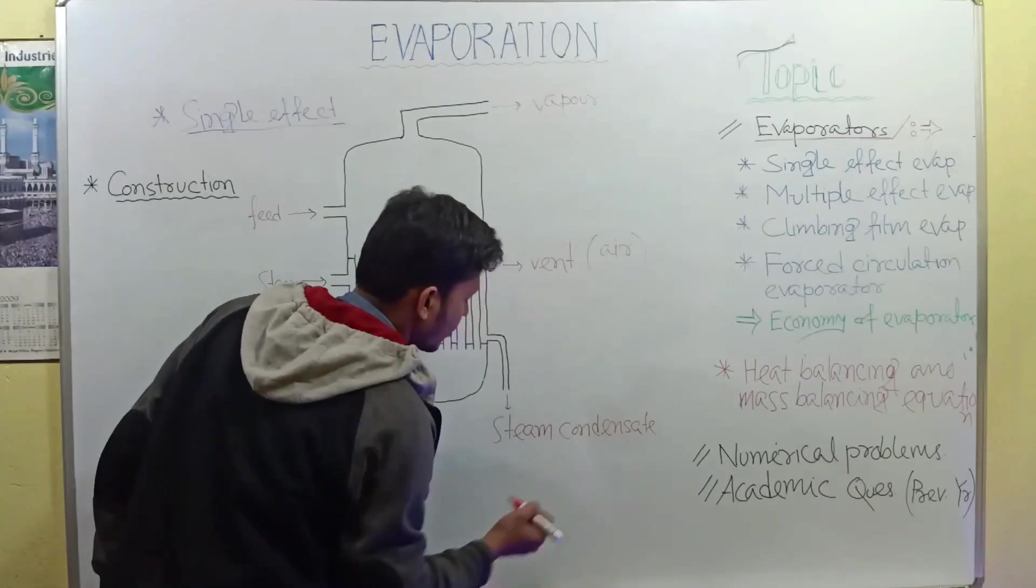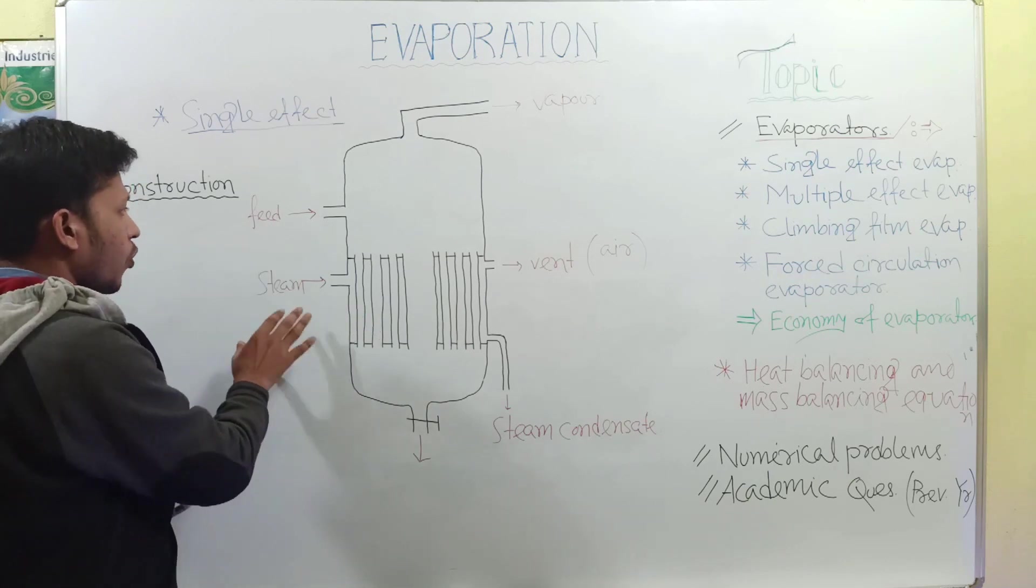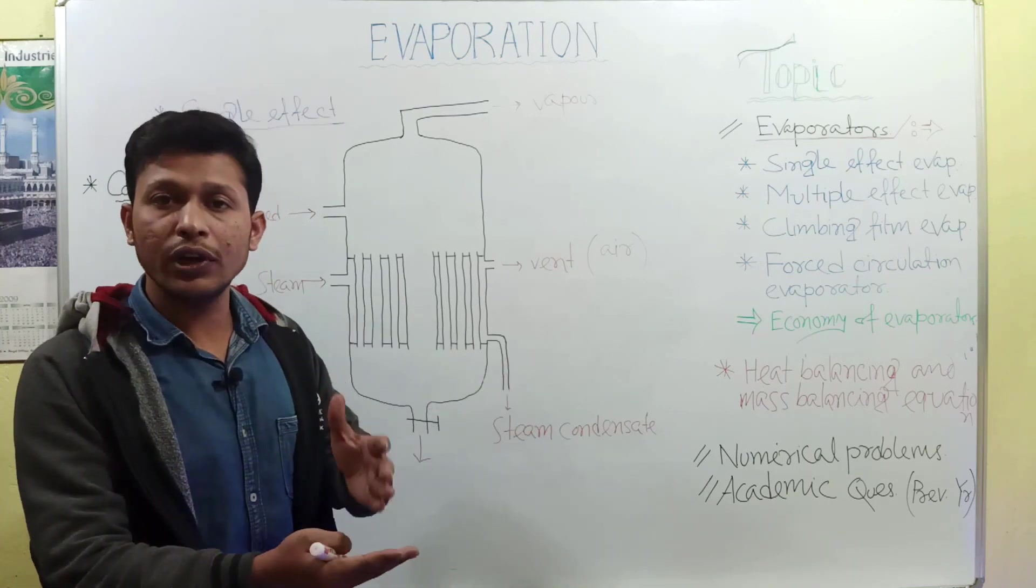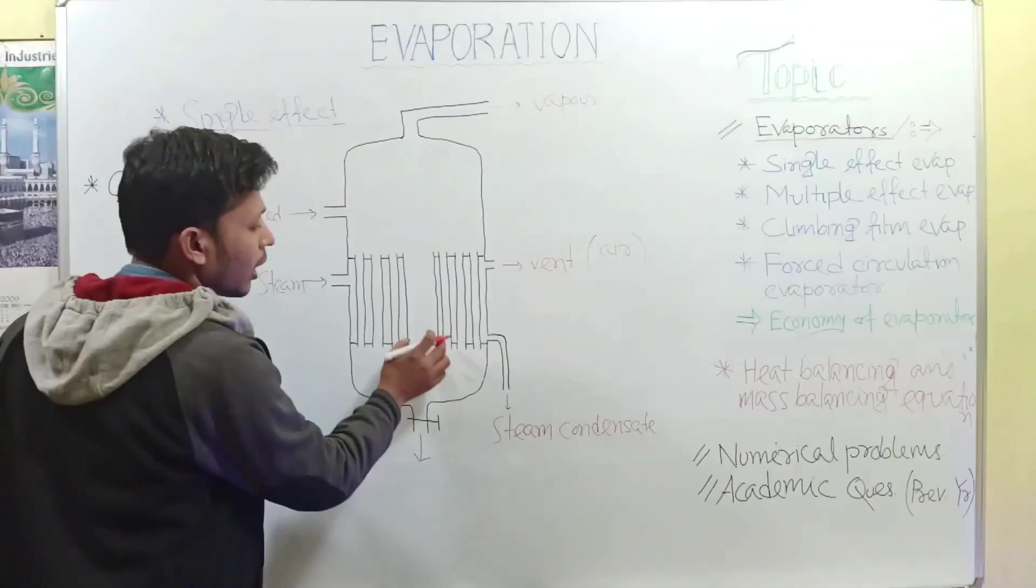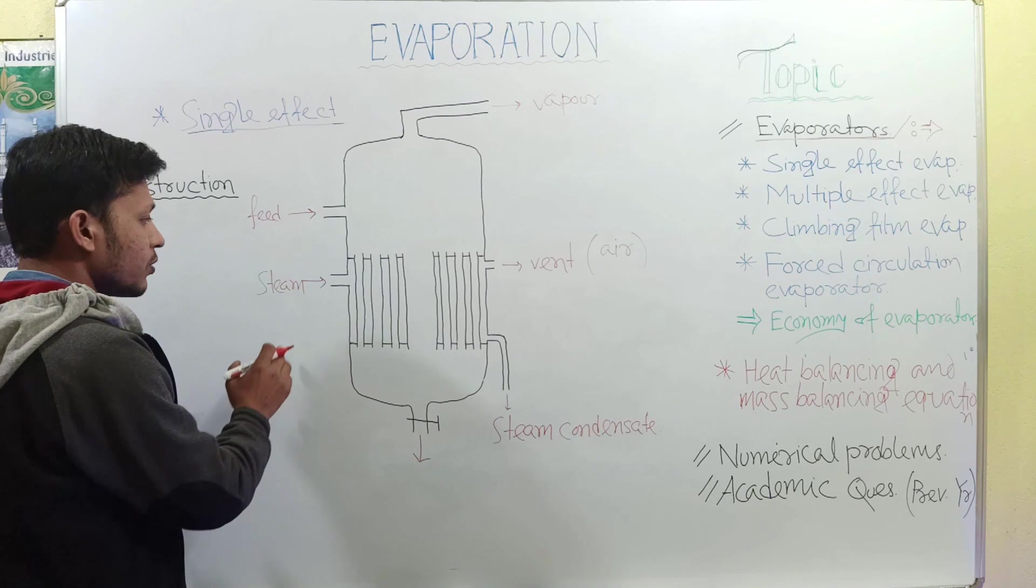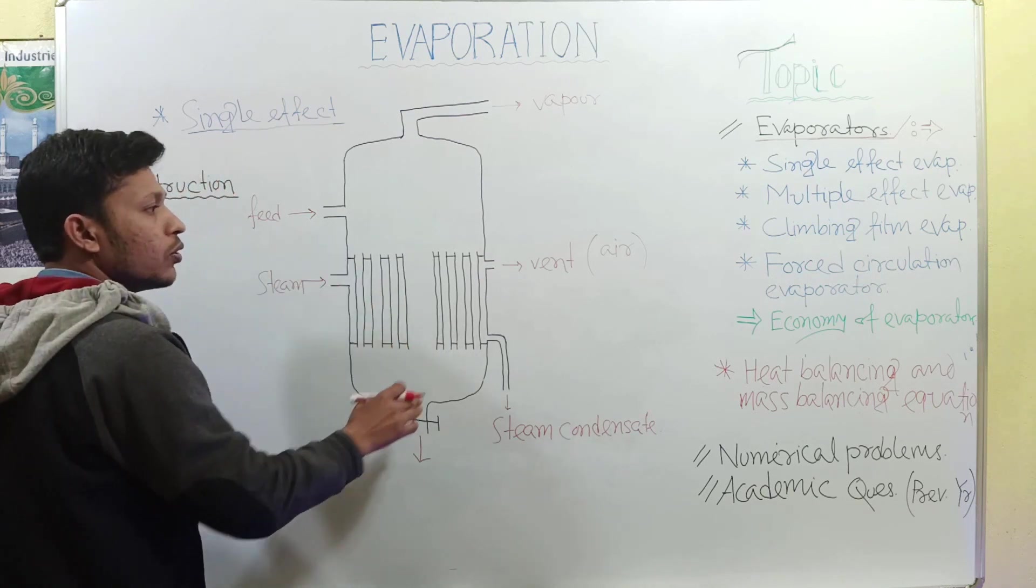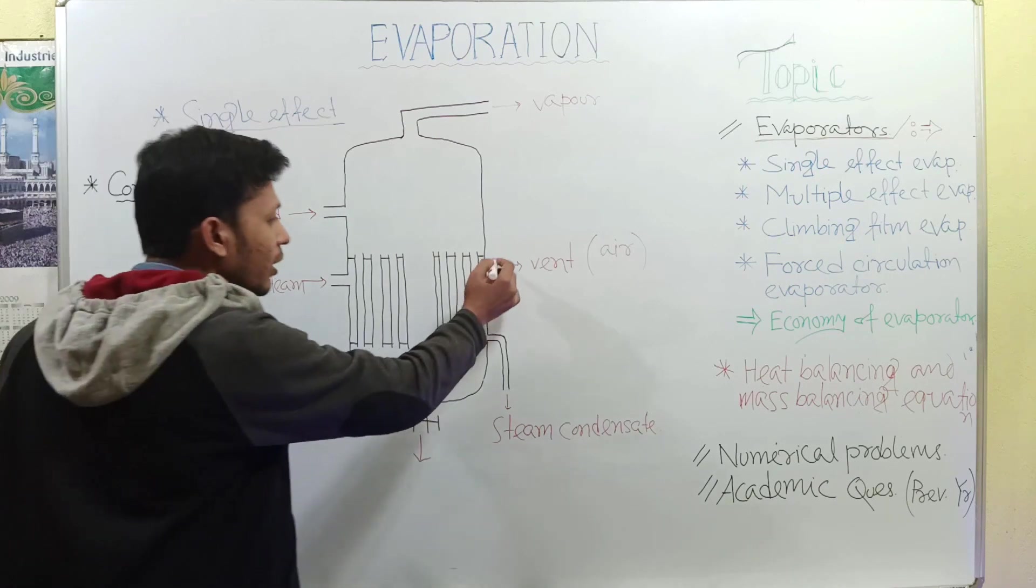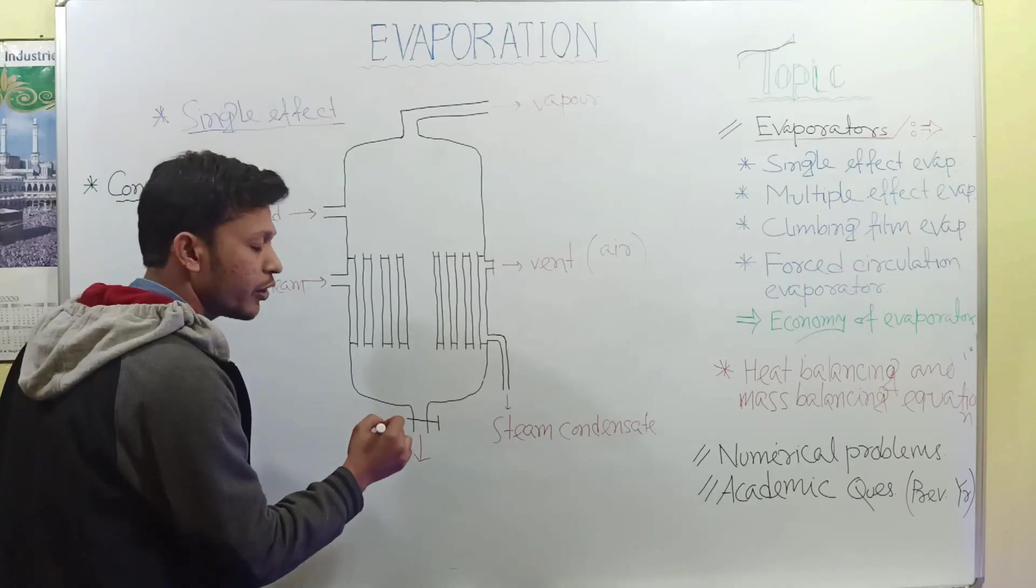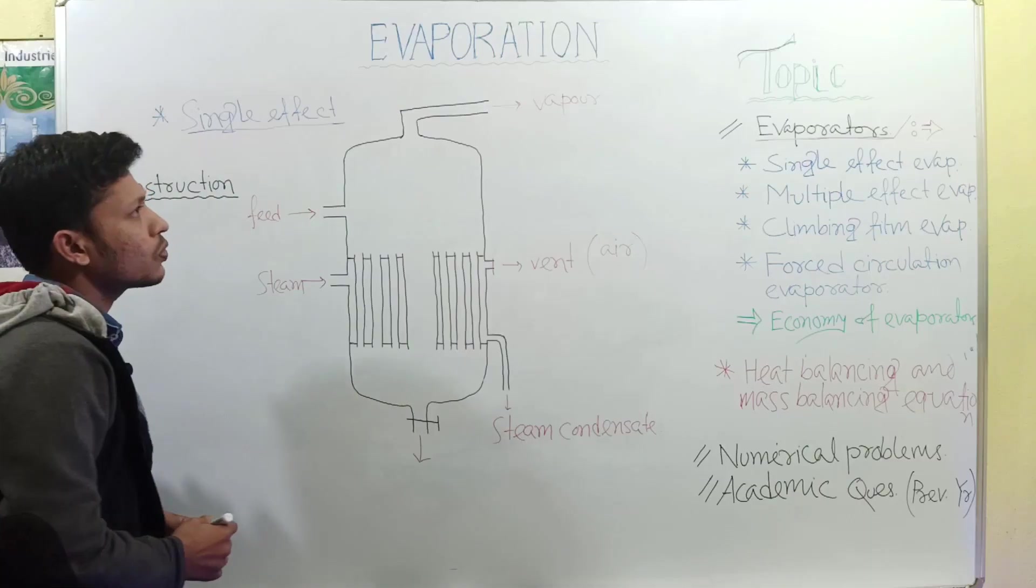What's steam condensate? When you provide steam, this steam comes to contact with the feed, and heat transfer happens from steam to feed. As heat transfer happens, some steam loses its heat and becomes condensate water. This water from the calendria comes out as steam condensate. This calendria contains some gas, and when you provide steam, the gas present starts to remove from this vent. When completely removed, the vent is closed. This is the most important outlet through which the desired concentrated product is collected. So this is the construction.